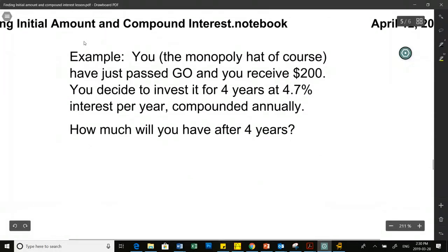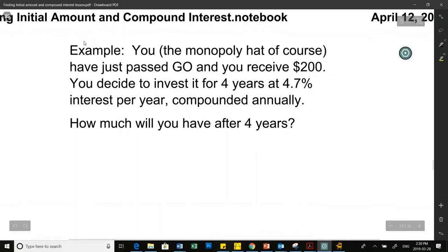So we're going to do a couple examples with this. This time we're just going to talk about interest that gets compounded annually, which is once a year. So when you see annually, like in this question, this is one compound per year, which means my interest gets added onto my principal amount at the end of the year. So you, of course you are the monopoly hat because that's the best monopoly piece, have just passed go and you receive $200. You decide to invest it for four years, earning 4.7% interest per year, so each year, compounded annually, so once a year. How much will you have after four years?